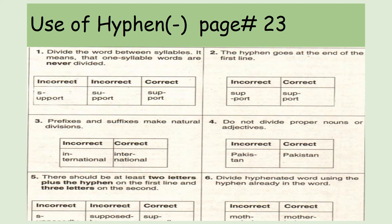Rule 6: Divide a hyphenated word using the hyphen already in the word. Some words naturally contain hyphens — for example, mother-in-law. This word, wherever it is written, is written with its natural hyphens together. If you have to divide it across lines, follow the natural hyphens: write 'mother-' on the first line, then 'in-' and 'law' on the next. Do not create artificial hyphen breaks — follow the word's natural hyphens.